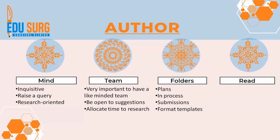The folders system is a very important concept I have practically used in all my publications as an academic surgeon. I keep four folders ready on my laptop, desktop, and drive. One is 'Plans' — future papers I'm planning. 'In-Process' contains data and concerns for papers I'm working on. The 'Submissions' folder tracks articles already submitted, awaiting review, or awaiting publication. And a 'Formatted Templates' folder. These four folders make the writing process very easy and help track your publications.